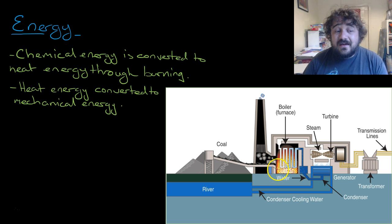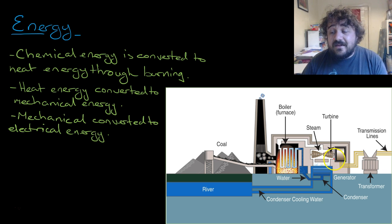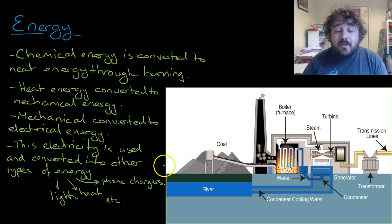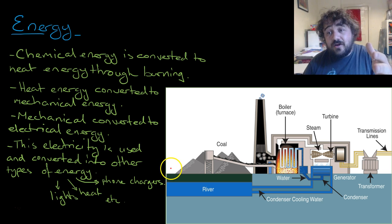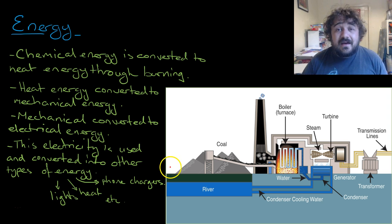The heat energy is converted into mechanical energy. That turns the turbine here. Mechanical energy is converted into electrical energy. And then we use that to do stuff in the house. So right now, a light behind me, a computer running.